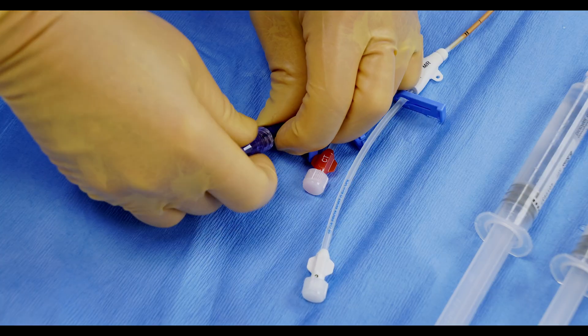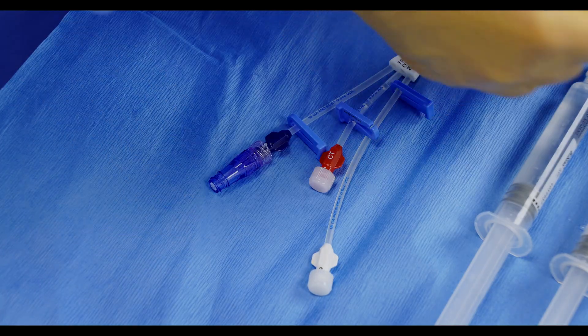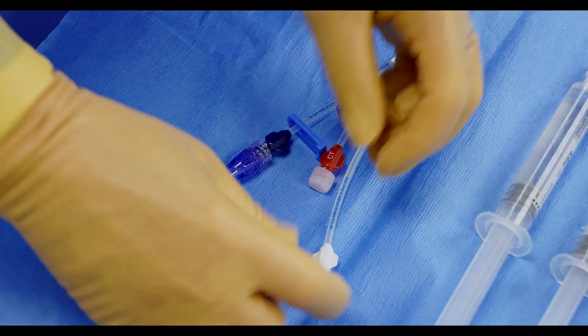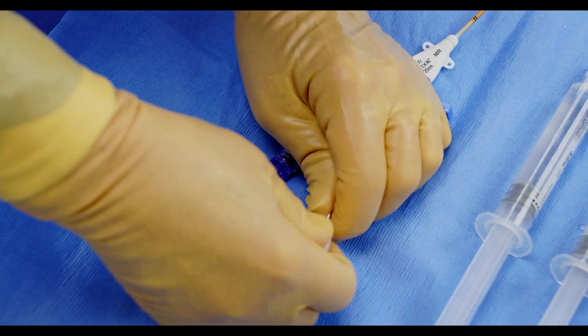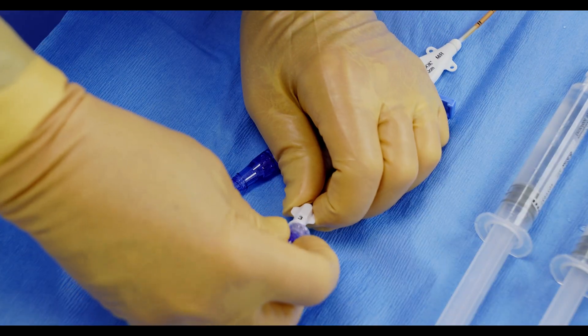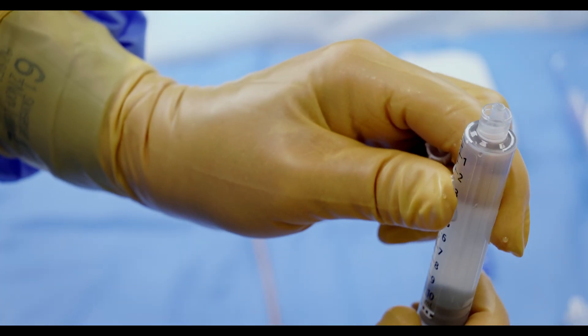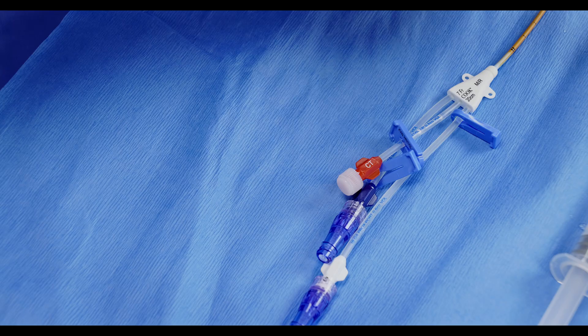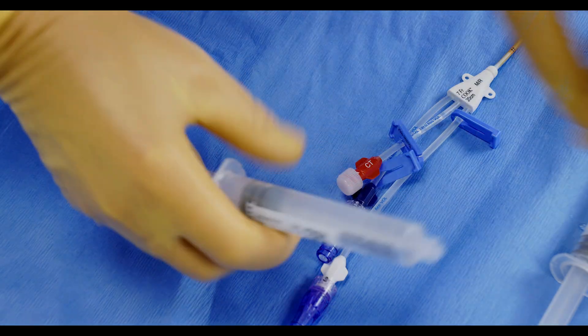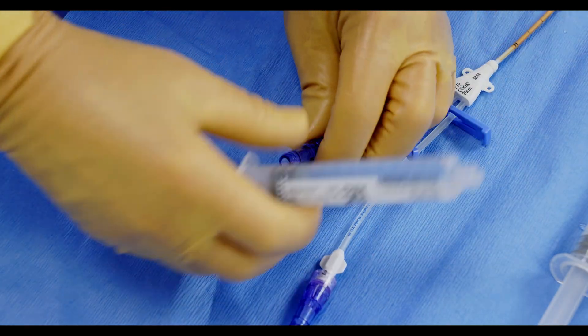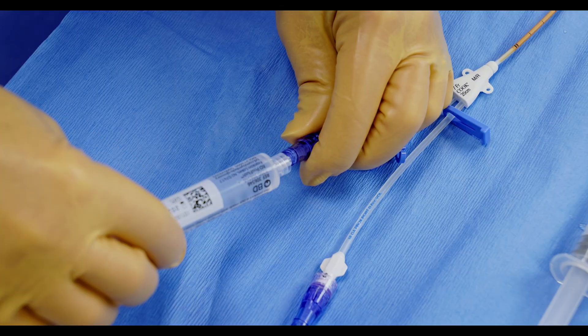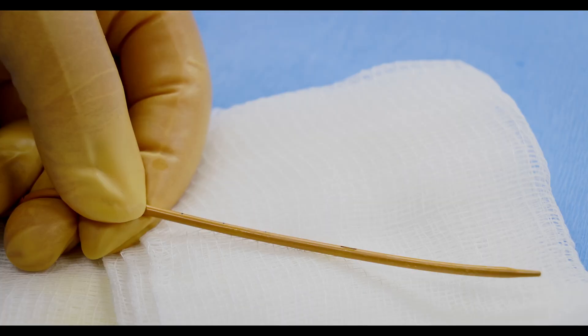Prior to insertion, it's crucial to prepare each lumen to ensure functionality and patient safety. Remove the luer lock caps from each lumen. Attach needleless injection caps, leaving the distal extension uncapped for wire guide passage. Flush each lumen using the provided pre-filled 10-milliliter saline syringes to activate hydrophilic coating and to confirm patency.